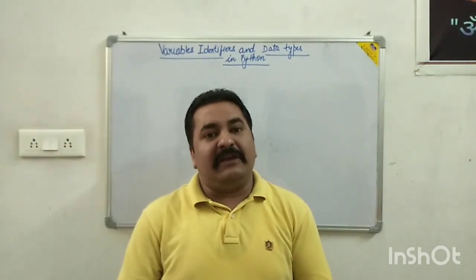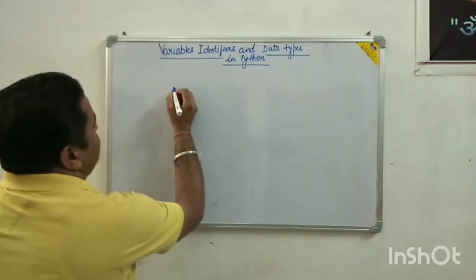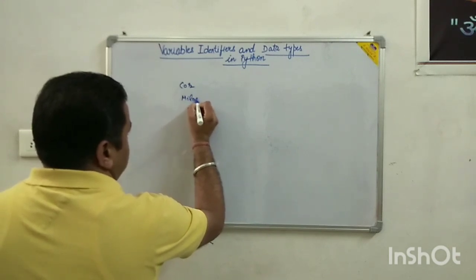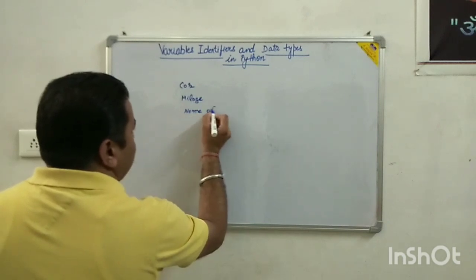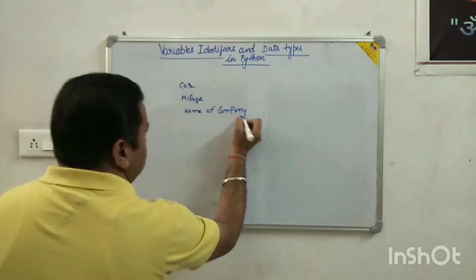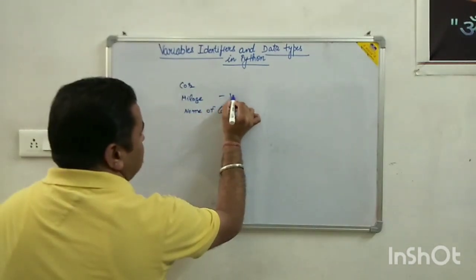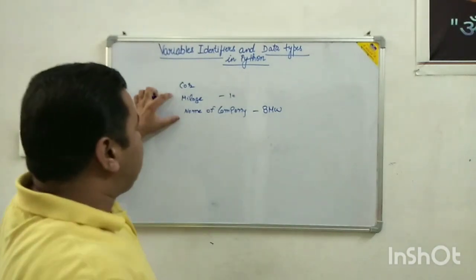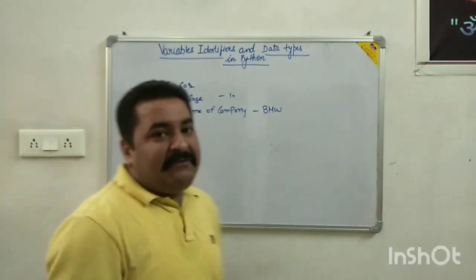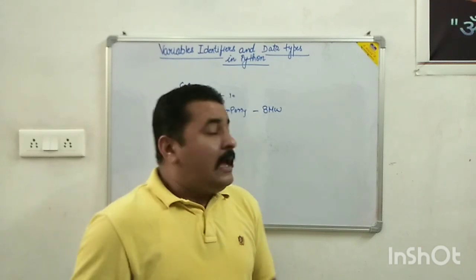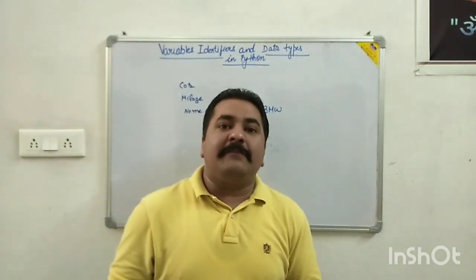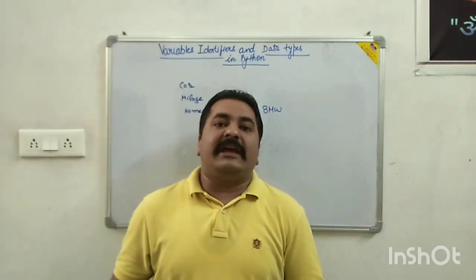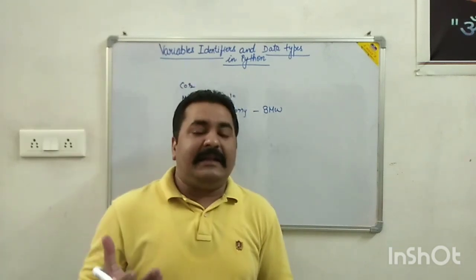As we all know, a variable is a name given to a particular memory location. For example, if we have a car, the car has a mileage and a name of the company. The mileage of the car is 10 and the name of the company is BMW. These are the variables of the car. Any name given to a memory location is known as a variable.